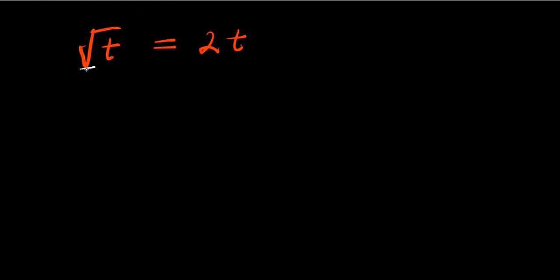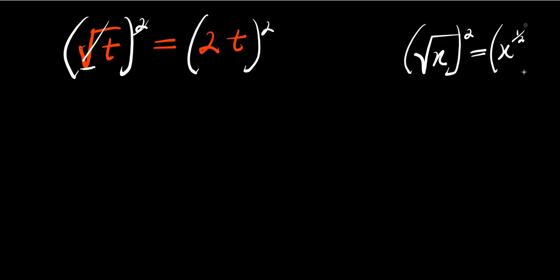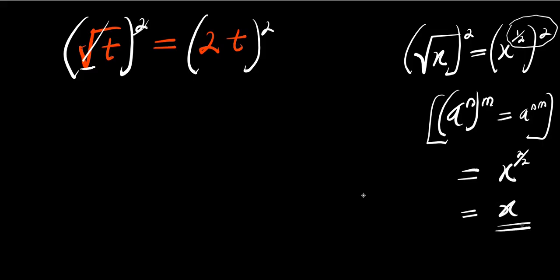From here we can eliminate the square root by taking the squares of both parts of this equation. This will cancel the square root — remember, if you have square root of x, this is like writing x to the power of one over two. If you raise this to the power of two, going by the identity (a^m)^n = a^(m×n), one-half times two gives x to the power of two over two, which gives you x. So this gives us t.